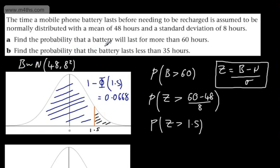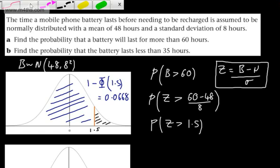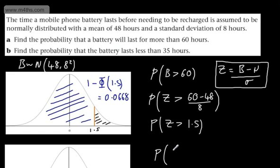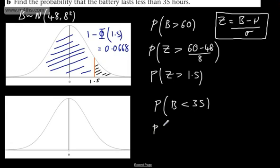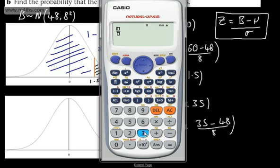Now we need to find the probability that the battery lasts less than 35 hours. We write P(X < 35), then substitute to get P(Z < (35 minus 48) divided by 8). That gives minus 13 over 8, which equals minus 1.625. Rounding to two decimal places as is standard in this course, we use negative 1.63.